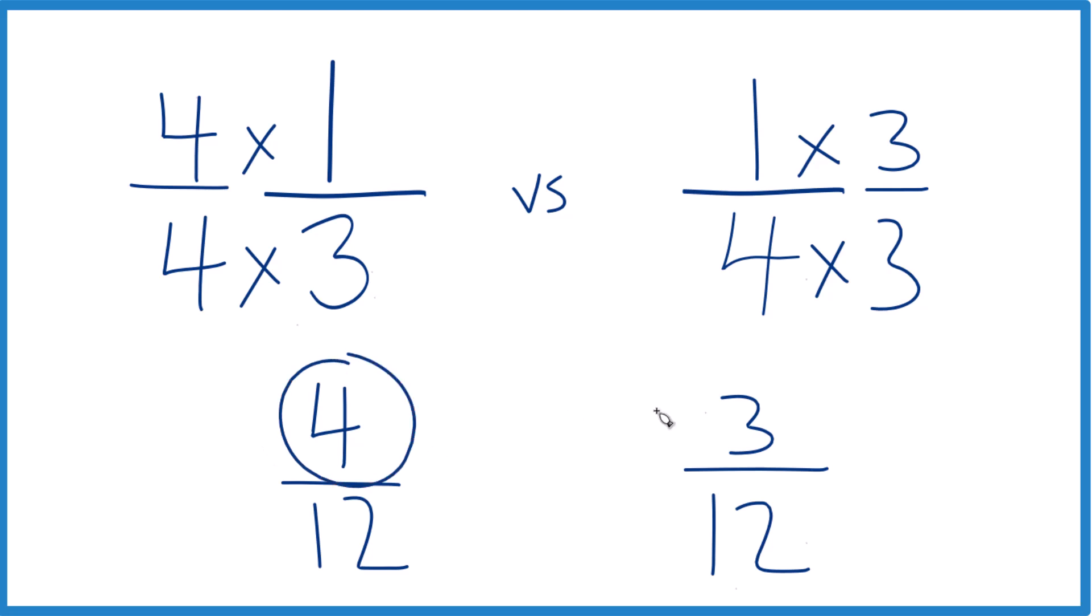Now we just compare the numerators. Four is larger than three, so four-twelfths, that's larger than three-twelfths, only by one-twelfth, but it's still larger. And one-third, that's going to be larger than one-fourth.